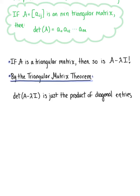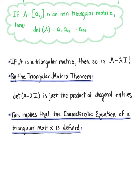This implies that the characteristic equation of this triangular matrix is defined as A sub 1 1 minus lambda times A sub 2 2 minus lambda all the way up to A sub n n minus lambda equals 0.